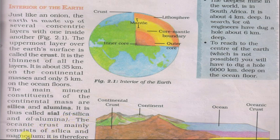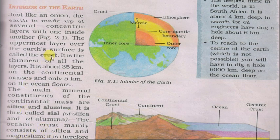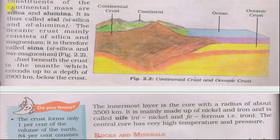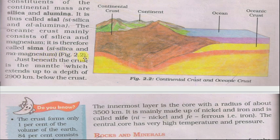The ocean crust mainly consists of silica and magnesium. Jo mahasagari crust hai woh do tattvon se milkar bani hai — silica aur magnesium. It is therefore called SIMA — SI for silica and MA for magnesium.